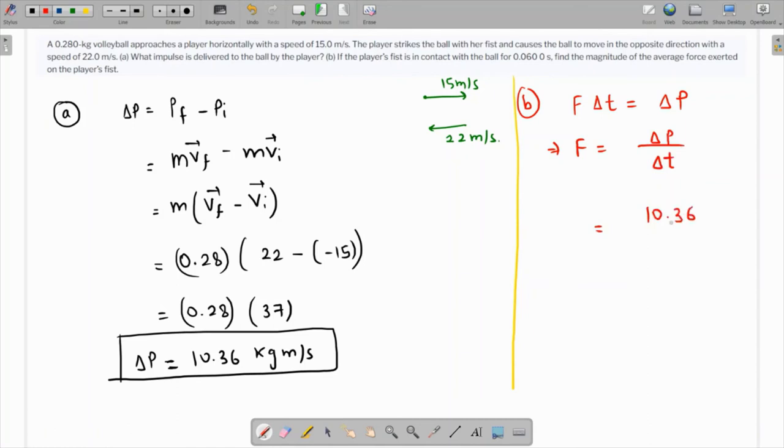So the required force comes out as 10.36 divided by 0.06, which is 172.67 newtons. This is the required force imparted by the player on the ball.